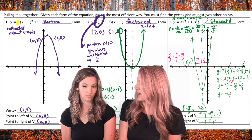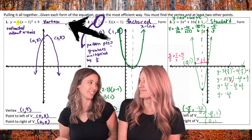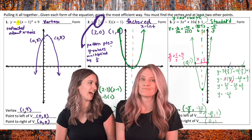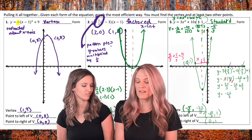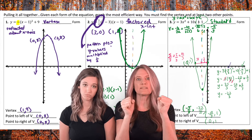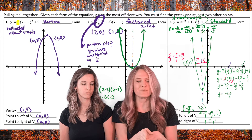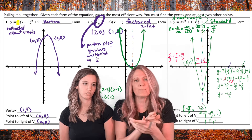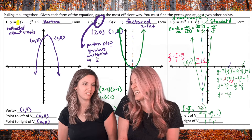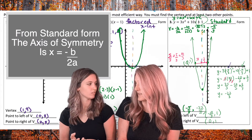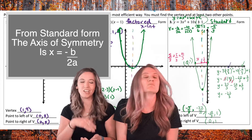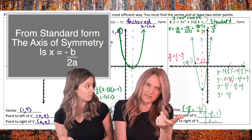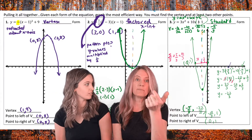What did you notice? Vertex form was easiest — all I needed was the one point which was my vertex, then pattern it. Factored form wasn't too bad either: two x-intercepts right away, axis of symmetry in the middle, x-coordinate of the vertex, plug it in, find the y-coordinate. And for standard form, we just learned how to find the axis of symmetry with negative b over 2a, plug in to find the y-coordinate, then use the y-intercept and symmetry instead of pattern points.